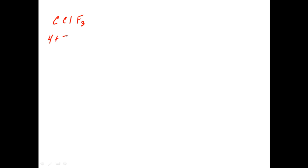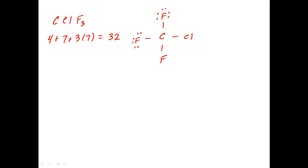So again, the first thing you do when you see a compound like this is add up the total number of valence electrons: four for carbon, seven for chlorine, and then three times seven for the fluorine. When we add this up, we get 32 valence electrons. We're going to do a Lewis structure, and you can put the chlorines and fluorines wherever you want. Each fluorine has to have a total of eight valence electrons around it, so we're going to put three lone pairs on each of the ligands. Eight times four is 32, so this is the correct Lewis structure for carbon chlorotrifluoride.